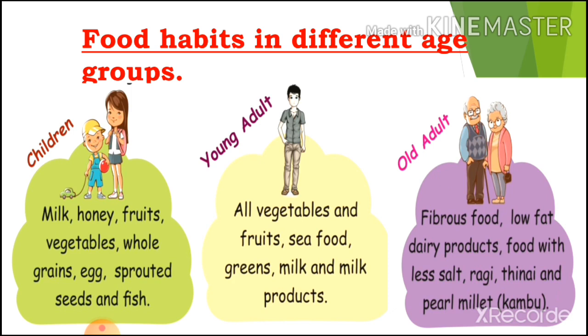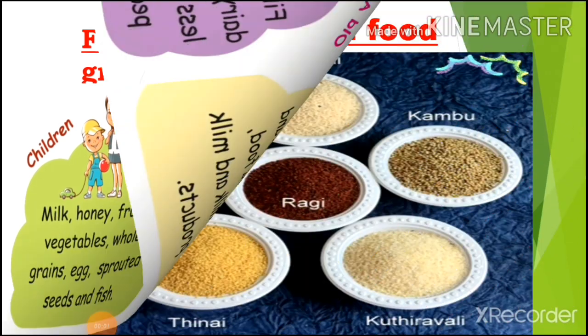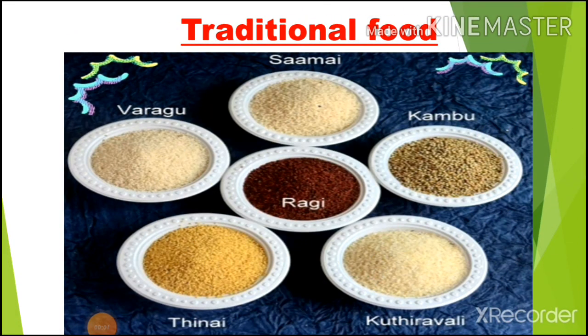Traditional food items. Our ancestors ate food that was easily available from nature, which led to healthy lives. Traditional foods include items that are high in fiber and less in fat.